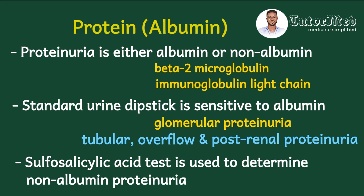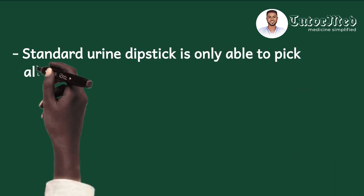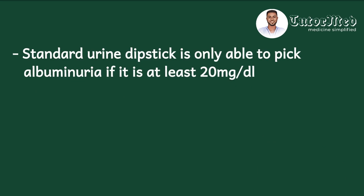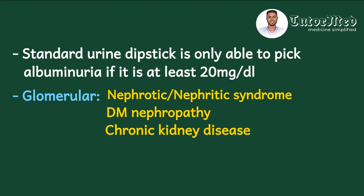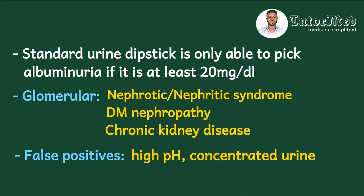While the standard dipstick is relatively sensitive to albumin, it only detects albuminuria at concentrations of at least 20 mg/dL in urine — any value below that would produce a negative result even if albumin is present. Glomerular causes of a positive protein on dipstick include nephrotic or nephritic syndrome, diabetic nephropathy, and some causes of chronic kidney disease. False positives can occur with a high urine pH, very concentrated urine, or prior use of radio-opaque contrast material. A very dilute urine can give a false negative result.